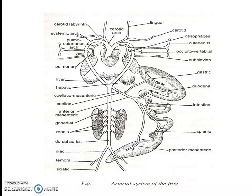The dorsal aorta runs backwards, and from it four pairs of renal arteries are given to the kidneys. From the first pair of renal arteries, a pair of gonadial arteries arise to the reproductive organs. The spermatic artery supplies the male gonads and the ovarian artery supplies the female gonads.